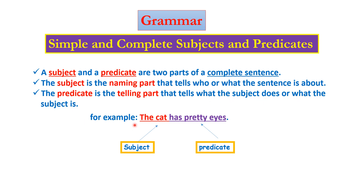For example, we have this sentence: "The cat has pretty eyes." About who are we talking? We are talking about the cat. So, the cat is the subject. And what does the cat do or what does it have? The cat has pretty eyes. So, "has pretty eyes" is the predicate.